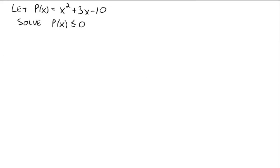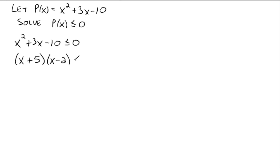Let's do one more. Let P of x equal x squared plus 3x minus 10, and we want to solve P of x less than or equal to 0. So we're solving x squared plus 3x minus 10 less than or equal to 0. This polynomial factors into x plus 5 times x minus 2. If you think of this as an equation, the zeros are negative 5 and 2.